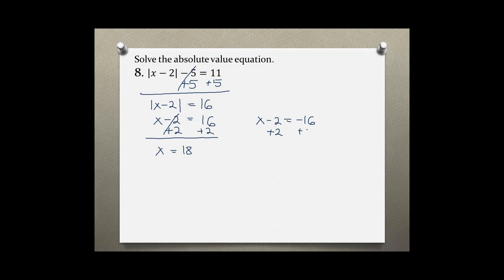Remember to always check your solutions to see if you get valid statements. Plugging in 18 into the original equation we get the absolute value of 18 minus 2 minus 5 is equal to 11.